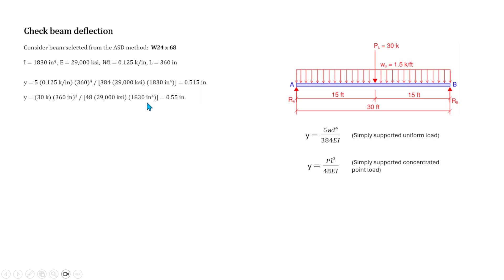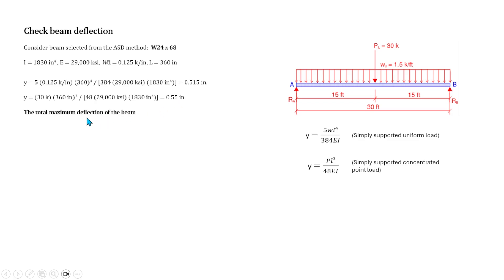For the deflection due to the concentrated load: δ_concentrated = 30 × 360³ / (48 × 29,000 × 1830) = 0.55 inches.